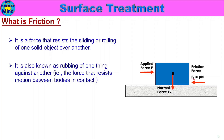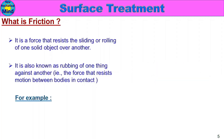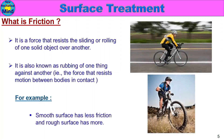Friction can be direct or indirect. For example, a smooth surface has less friction and a rough surface has more. If we cycle on a smooth road, we can go fast and easy. That is why surface treatment is used on surfaces to reduce friction and reduce energy waste.